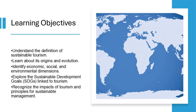Learning Objective 5: Understand tourism's impacts on society and the environment — analyze both positive and negative impacts of tourism on communities and ecosystems, highlighting the need for balanced approaches.